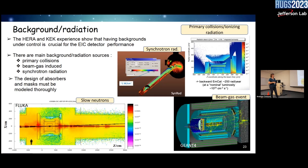In addition to synchrotron radiation, we also have beam-gas events — if the vacuum inside the accelerator is not perfect, there will be extra background on top of your physics events. Radiation hardness is a concern, but simulations show it's mainly an issue in the forward areas. There will be hot spots close to the beam pipe, as shown in the neutron flux simulation.